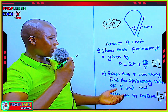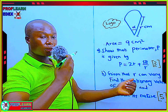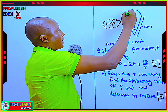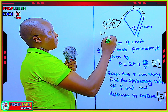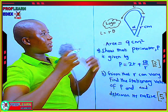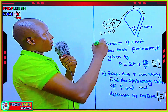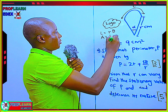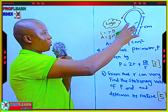We are also going to work out the stationary value of P, given that R varies, and then determine the nature of the stationary point. Something we need to know: arc length L is given by the formula R theta, where R is the radius and theta is the angle. You also need to remember that area is one-half R squared theta. These are the most important formulas you need to know to work out a question like this.